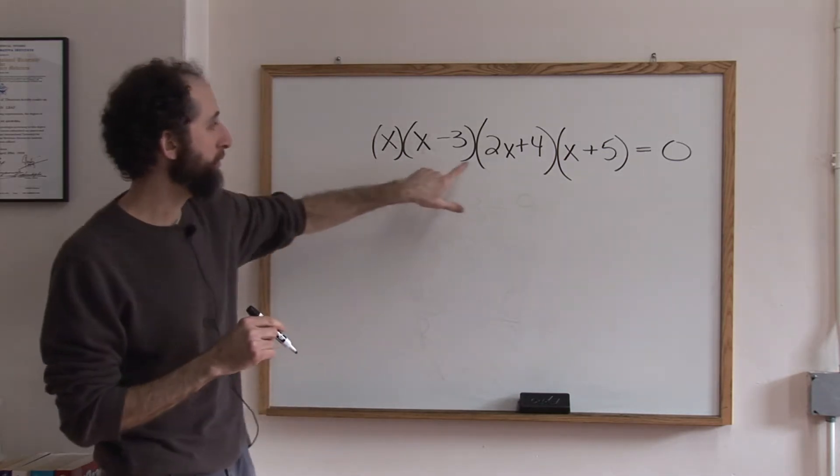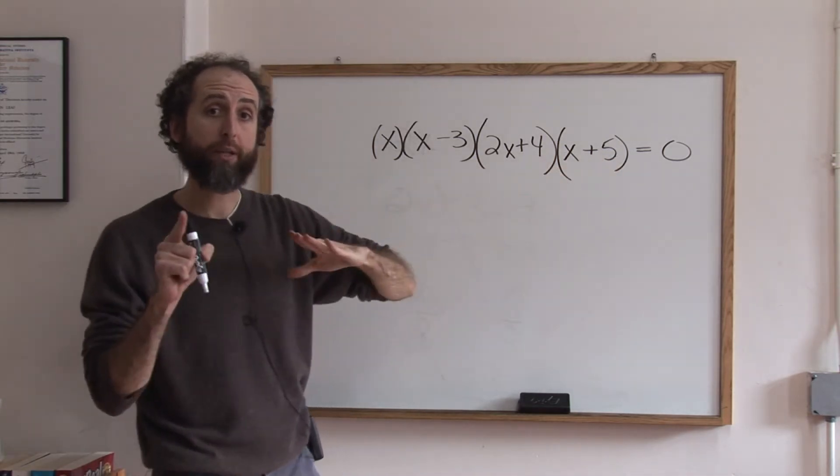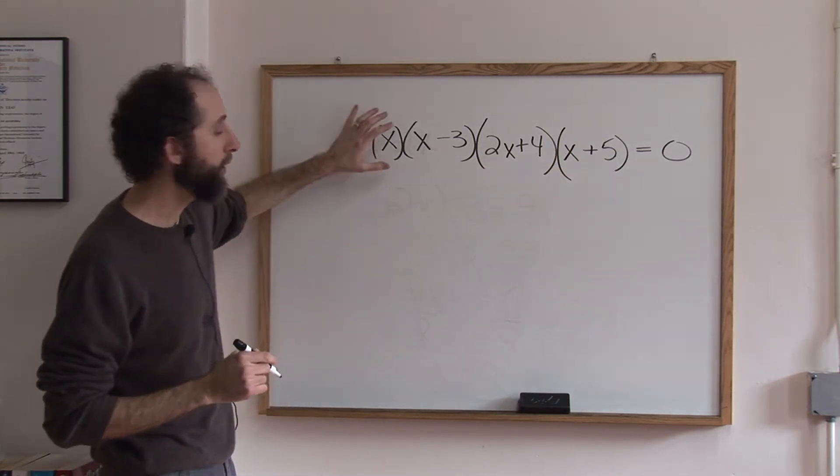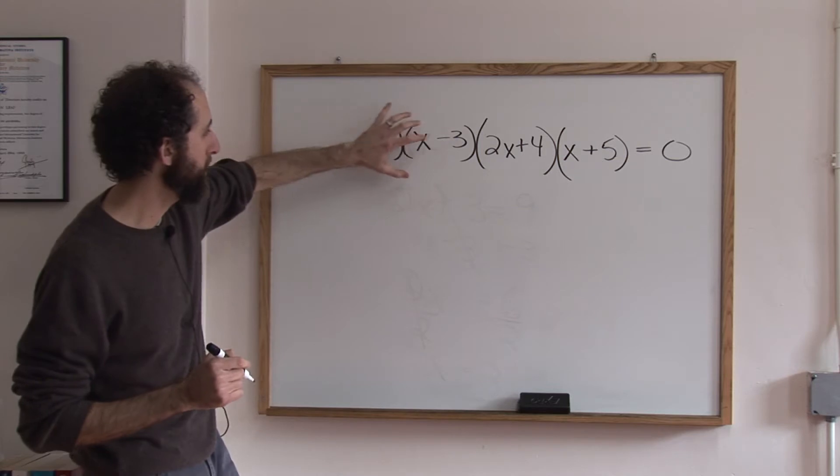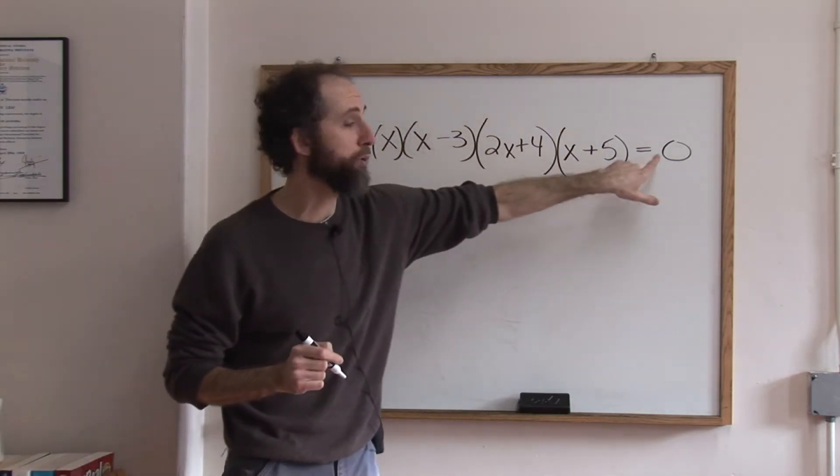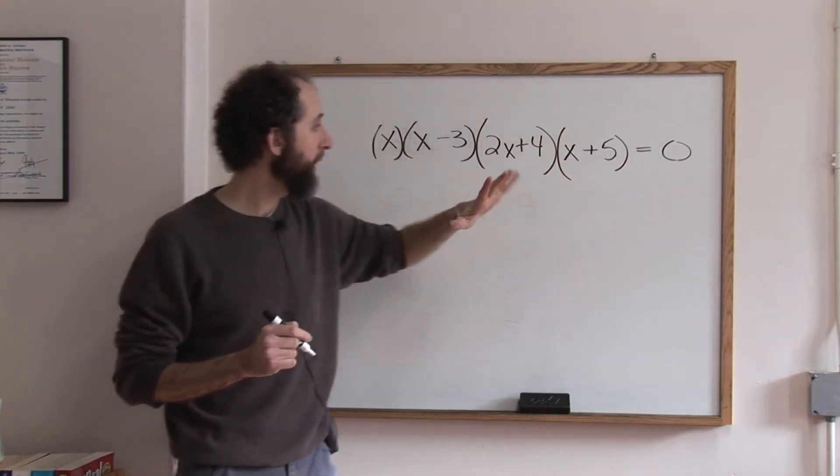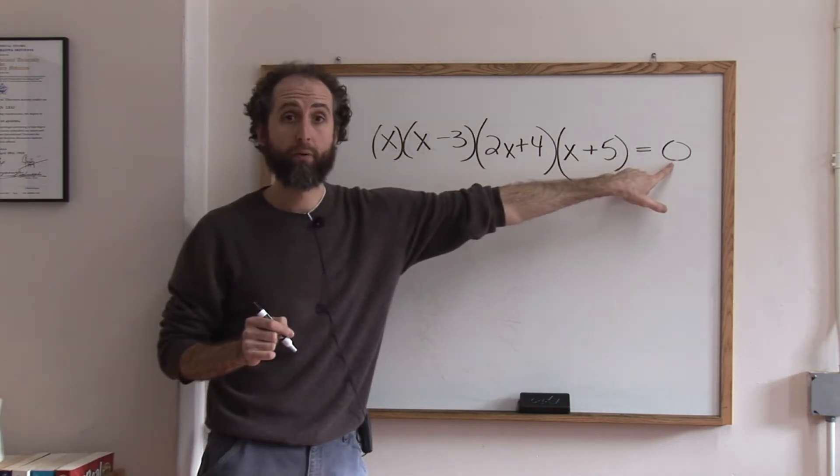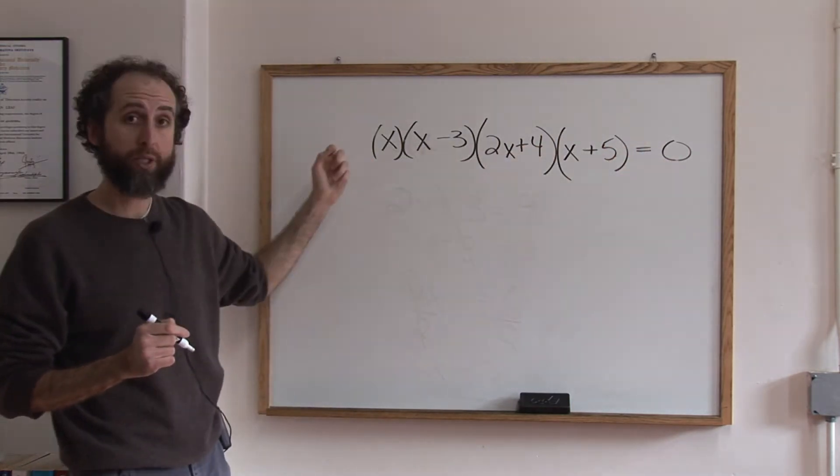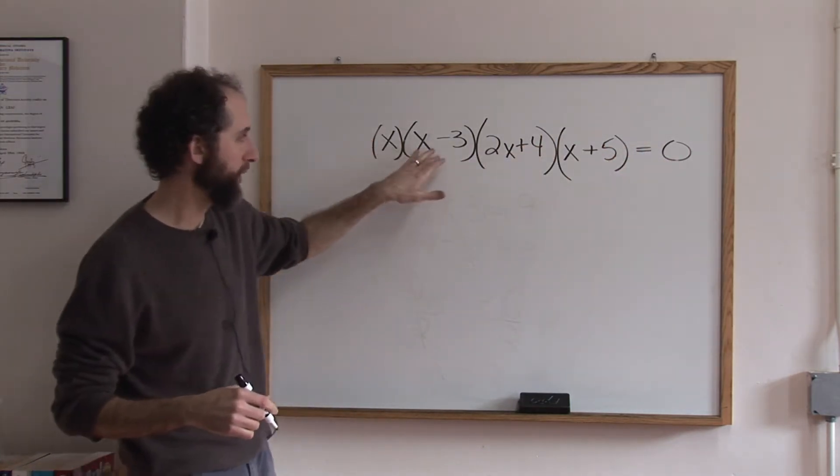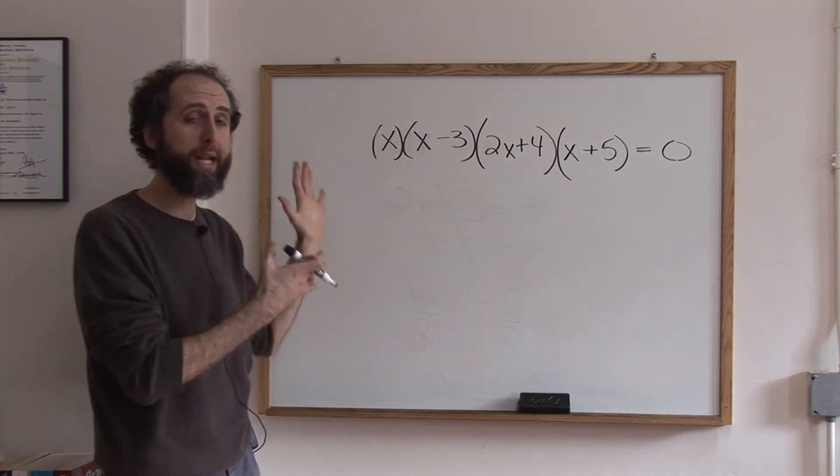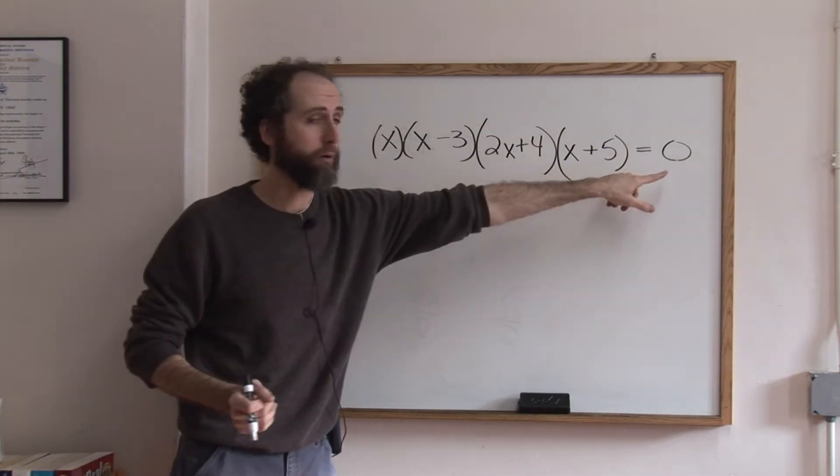So if we have it factored as we do here, the way we get the roots is we're going to look at each part and say when you have this times this times this times this equals zero, in order to multiply to get zero, one of these guys has to equal zero. In fact, if any of these was zero, doesn't matter what happens in the other parentheses, anything times zero is zero.